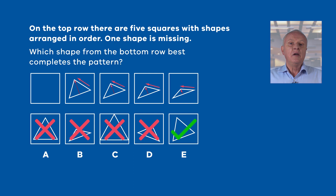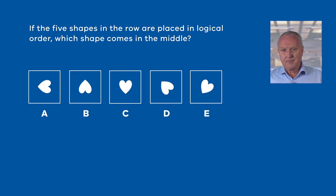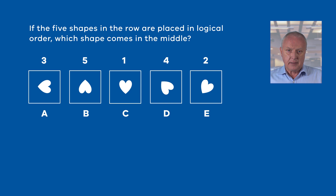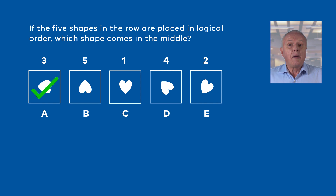In this next type of question, five shapes are shown and you need to place these in logical order so that you can identify the one in the middle. Looking at the five shapes, we can see that the heart is rotating. One way to find the correct shape is to number the shapes from one to five in the order that they are rotating. You could write the numbers in order on a piece of paper. Number three is the middle number, so option A is the correct answer. You may be able to visualize the shapes in the correct order without writing the numbers — do this if you can, because it will allow you to work more quickly.